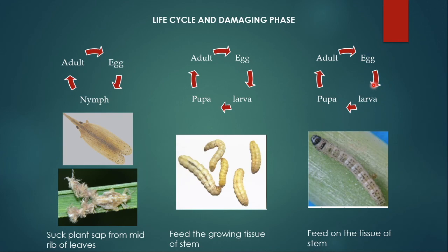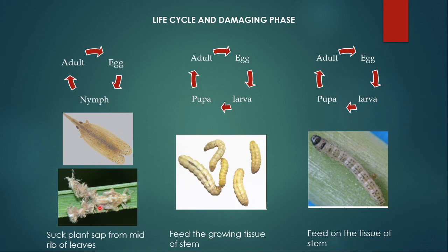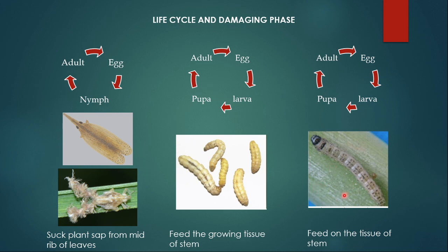Now let us talk about the life cycle and the damaging phase. The life cycle of Pyrella is different from the life cycle of Scirpophaga and Chilo. In Pyrella's life cycle, you find the adult stage, egg stage, and nymphal stages. In Scirpophaga and Chilo, you find larval and pupal stages. In Pyrella purpusilla, both adult and nymph cause damage by sucking plant sap from the midrib of the leaves. In Scirpophaga nivella, only the larval stage is injurious and they feed on the growing tissue of the stem. Chilo infuscatellus, the sugarcane stem borer, makes tunnels inside the stem and can feed on tissue anywhere in the stem.